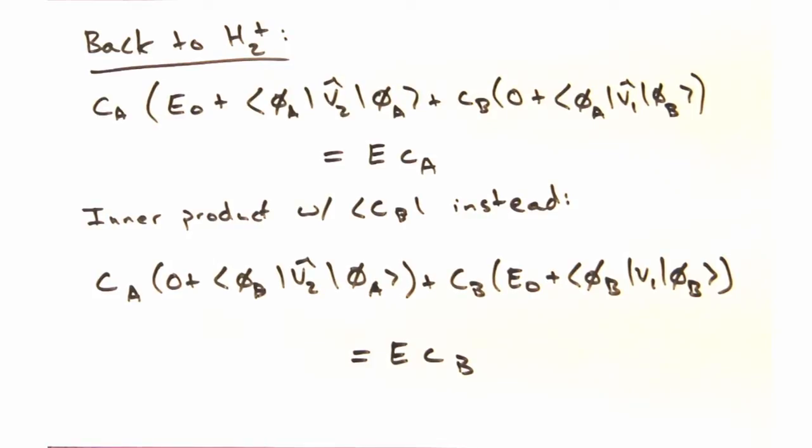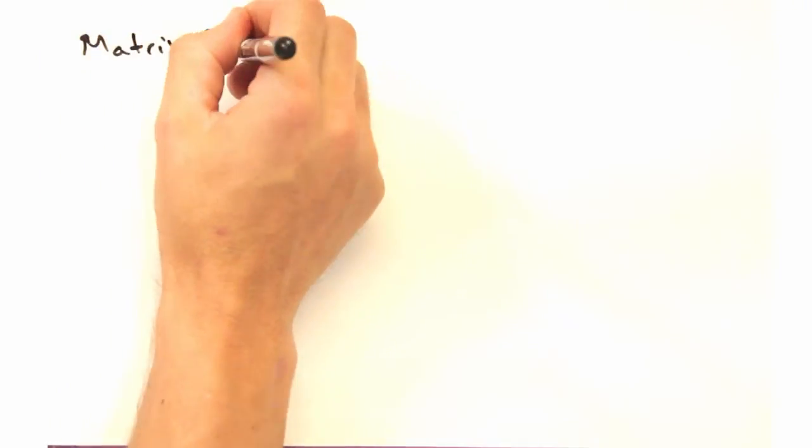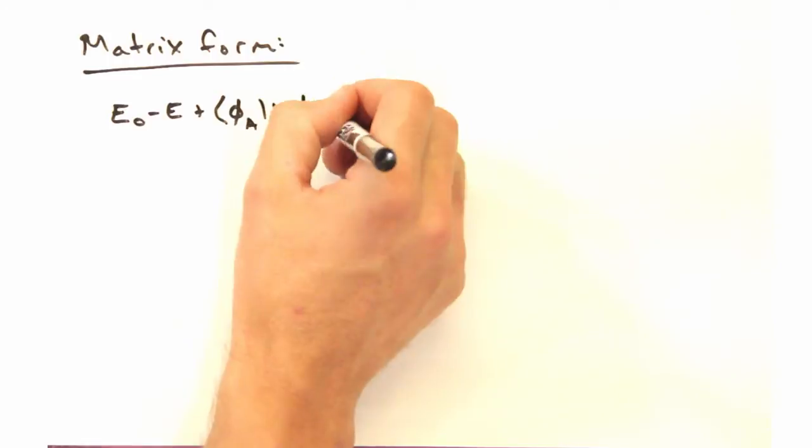The problem is these coefficients CA and CB. At this point, we have no idea what they are. Hmm, let's see if we can separate them out of the solution. Okay, I'm thinking we start by pulling all of our terms to one side so each equation equals 0.